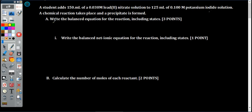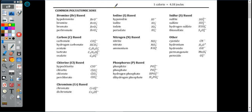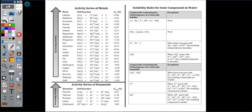Part A: write the balanced equation for the reaction, including states. Here we're going to lean on our reference materials. We've got this list of polyatomic ions to help us write the formulas. And when it comes to states of matter, we're also going to look at these solubility rules to help us identify whether things will be aqueous or insoluble precipitates.